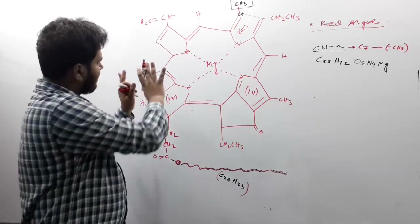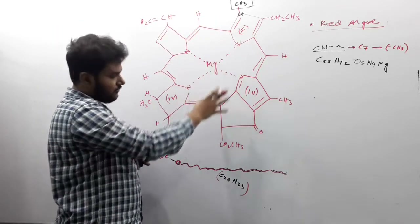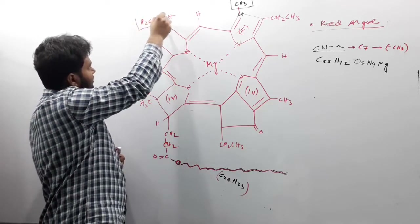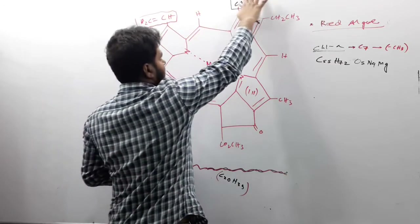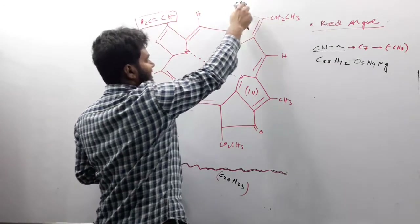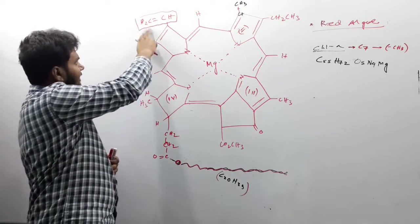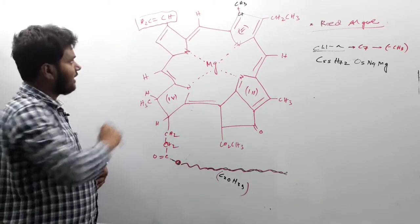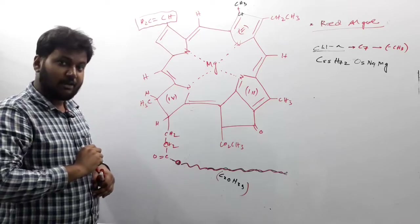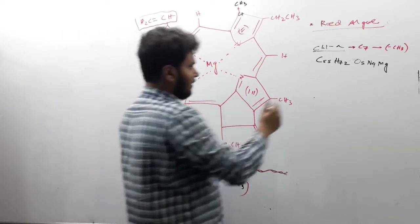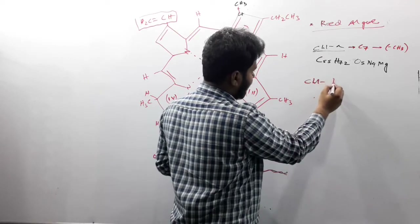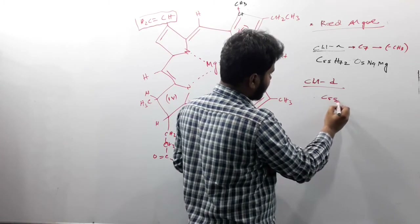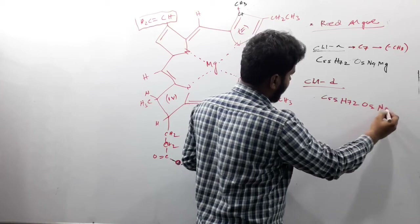The structure of chlorophyll D: when we made chlorophyll B, we worked with the C7 side chain. But when making chlorophyll D, we work with a different side chain. This side chain — a vinyl group — will be replaced by one aldehyde group.